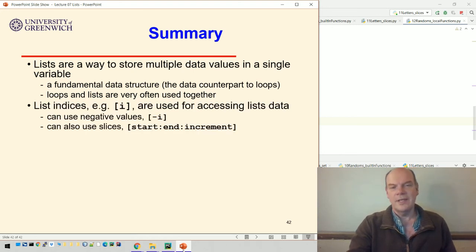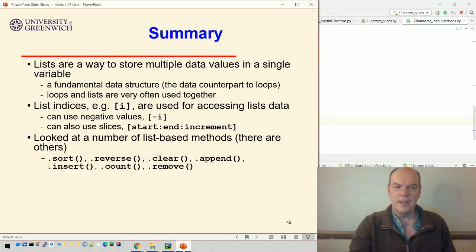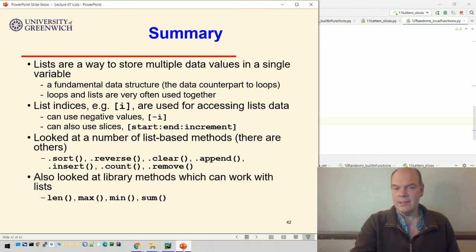We can use the list indices to access particular values. As we've seen, we can use negative values to start from the end of the list and we can also use slices to get bits of the list. And then we've looked at a number of list based methods, so doing things like sorting and reversing and clear, they're not the only ones but those are perhaps the commonest ones. And we've looked at library methods that can work with lists, like the length and the max and the min and the sum.